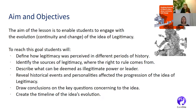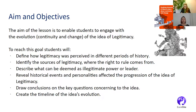On this slide you can see the aim and objectives of the lesson. The lesson aims to enable students to engage with the evolution of the idea of legitimacy and how it developed throughout history. Students will define how legitimacy was perceived in different periods, identify the sources of legitimacy, describe what can be deemed as illegitimate power, reveal historical events and personalities affecting the idea's evolution, draw conclusions on controversial issues, and create a timeline of the idea's evolution.